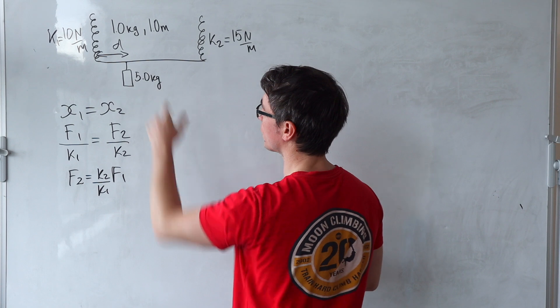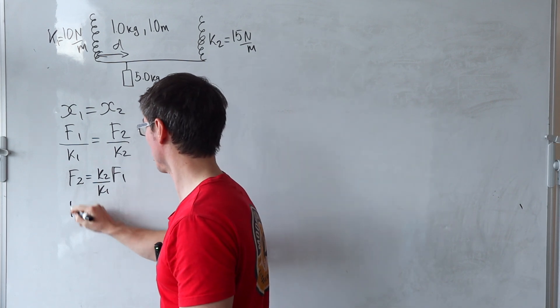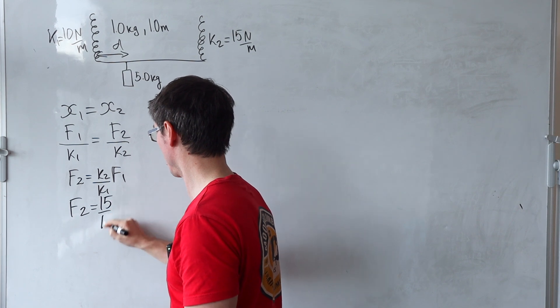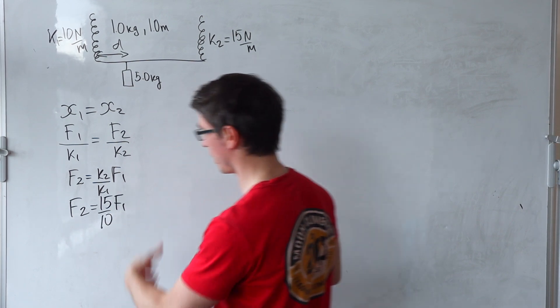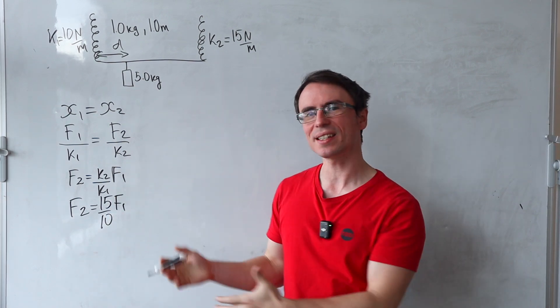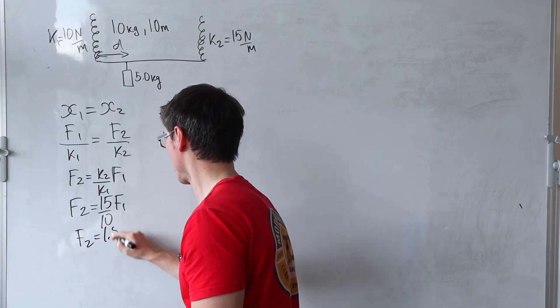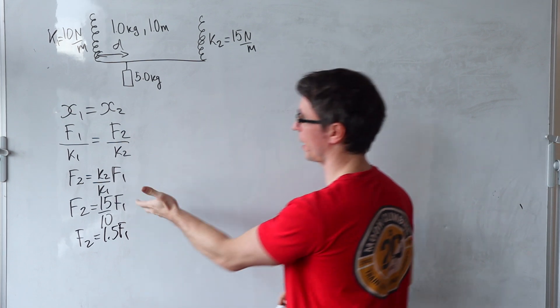Now k2 is 15, the other one is 10. So this means that f2 will be 15 over 10 multiply that by f1. So we have a nice and easy expression: f2 is just 1.5 times multiply that by f1.